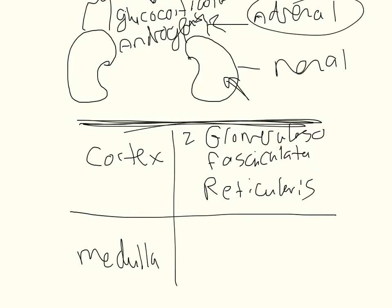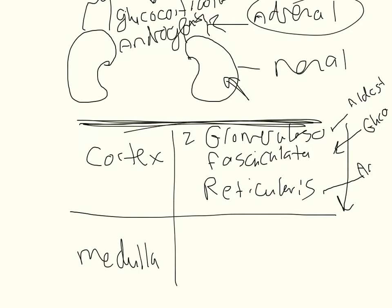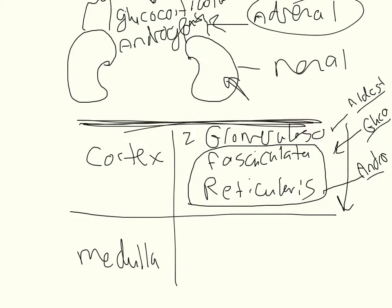I like the mnemonic: the deeper you go, the sweeter it gets. The zona glomerulosa is going to be primarily aldosterone, the zona fasciculata is going to be glucocorticoids — so you get glucose metabolism regulation — and then the zona reticularis, you get the androgens or sex hormones. So: salt, sugar, sex — the deeper you go, the sweeter it gets. However, this is only partially true because the fasciculata and the reticularis have quite a bit of overlap in the hormones that they can both produce.